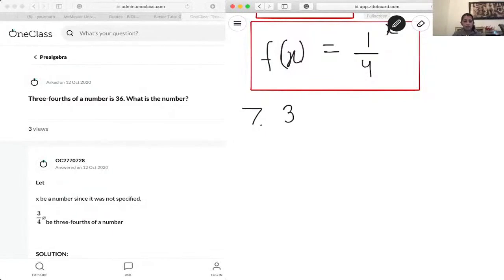So three-fourths, you really have to read the question and see what they're trying to say. Okay, so three-fourths of a number, which means three-fourths is being multiplied by a number which we don't know, so we're just going to label it as x.